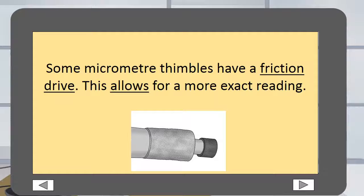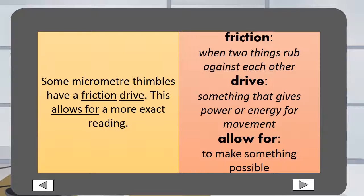Some micrometer thimbles have a friction drive. This allows for a more exact reading. Friction is when two things rub against each other. A drive is something that gives power or energy for movement. To allow for means to make something possible.